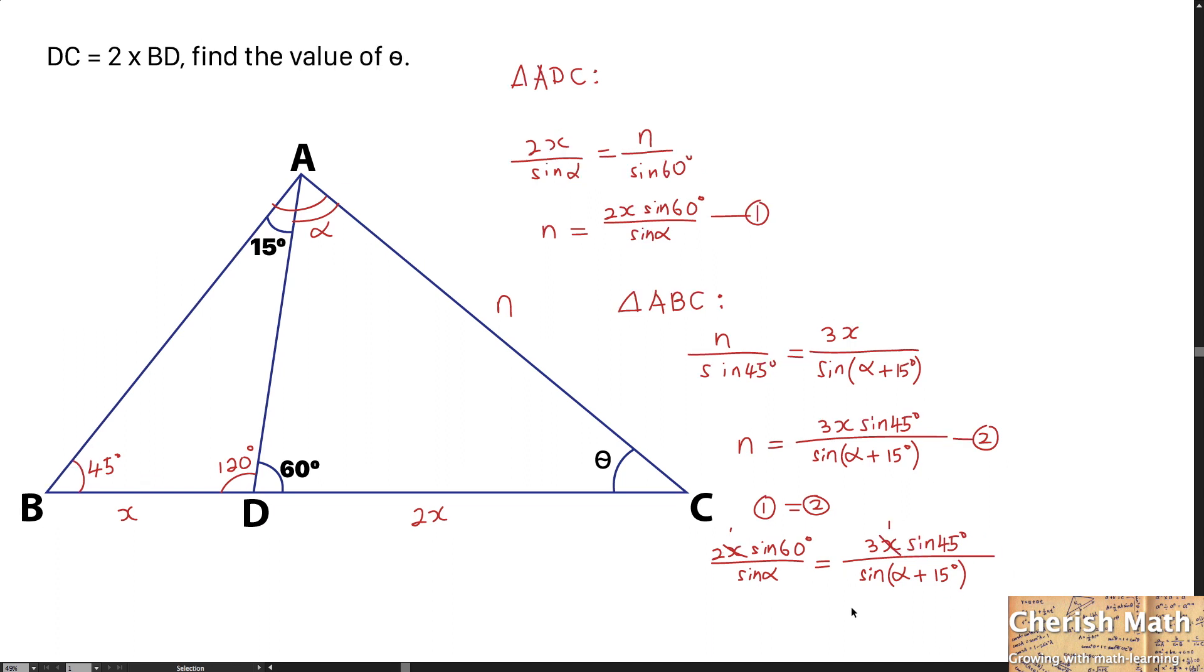I'm going to continue my work on the right side. Sine 60 degrees becomes square root of 3 divided by 2. And sine 45 degrees is 1 over square root of 2.